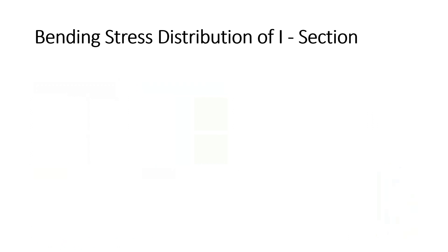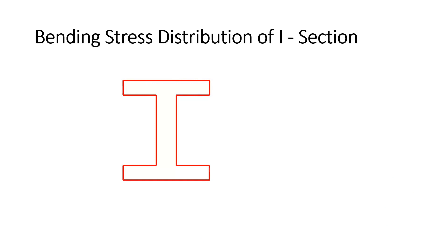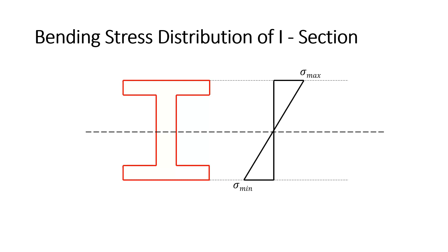Now let's talk about the bending stress distribution of an I-section. Consider an I-section with a neutral axis. The bending stress distribution shows that the maximum bending is taken by the flange of the section, and very little bending is taken by the web portion.